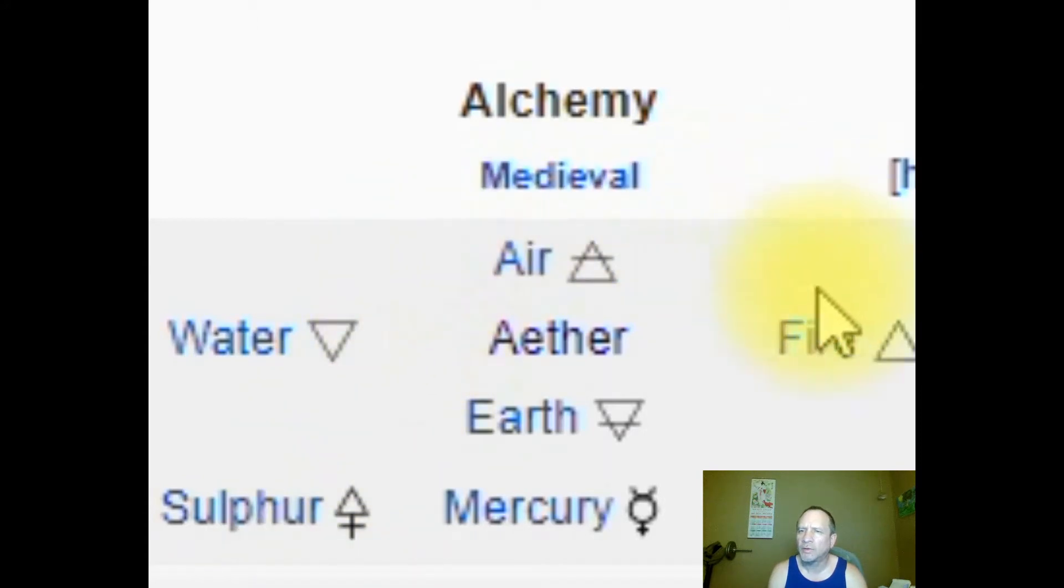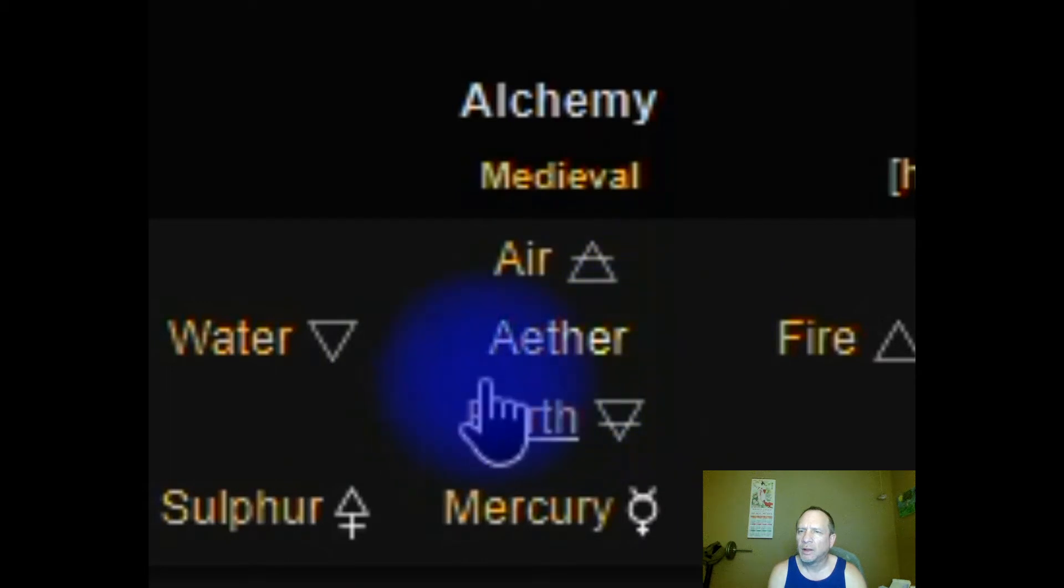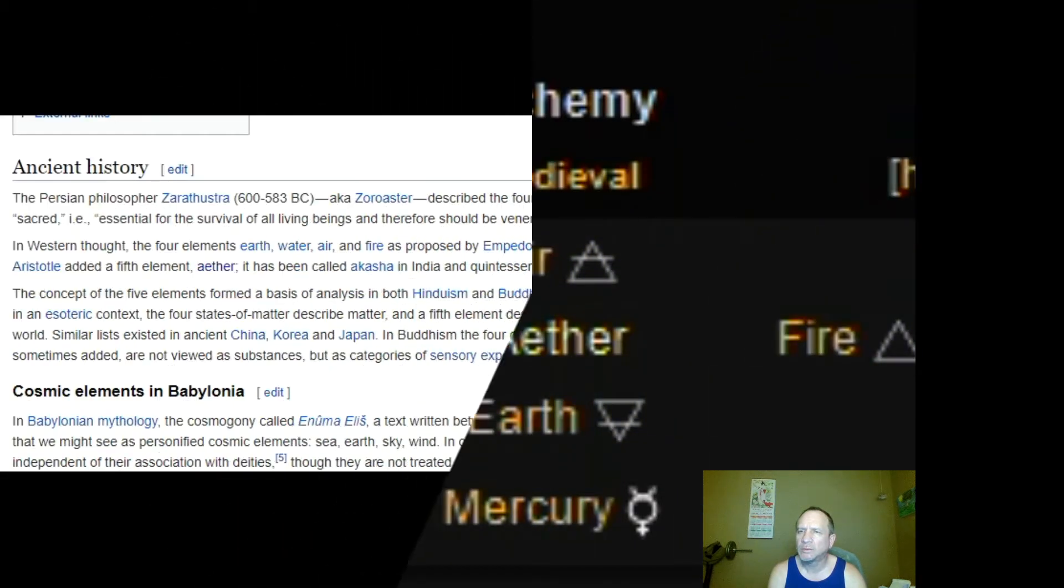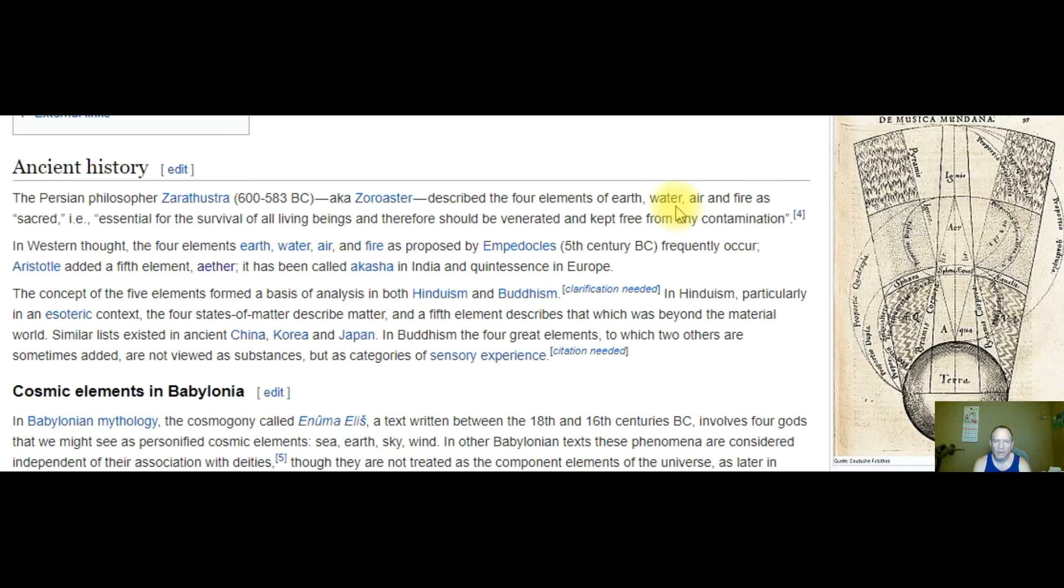In alchemy, the four elements of air, fire, earth, and water were held together by the ether, and they included sulfur, mercury, and salt as well. In Persia, which is Iran, described the four elements of earth, water, air, and fire as sacred, and it's essential for the survival of all living beings.